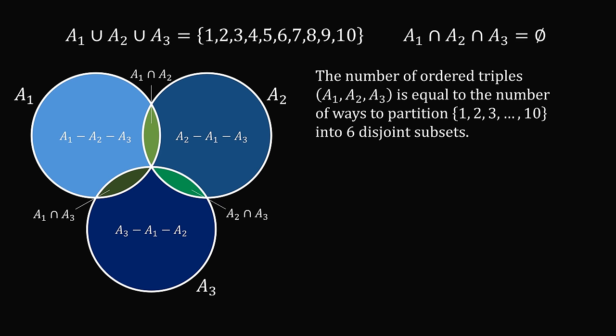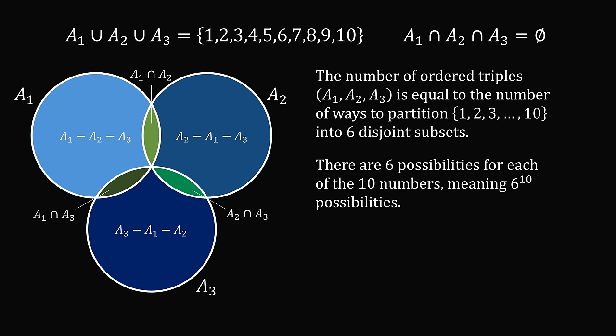So now let's solve the problem. The number of ordered triples A1, A2, A3 is equal to the number of ways to partition the whole numbers from 1 to 10 into six disjoint subsets. There are six possibilities for each of the 10 numbers, meaning 6 to the power of 10 possibilities. 6 is equal to 2 times 3, so that gives us 6 to the power of 10 is equal to 2 to the power of 10 multiplied by 3 to the power of 10, and that's the answer.